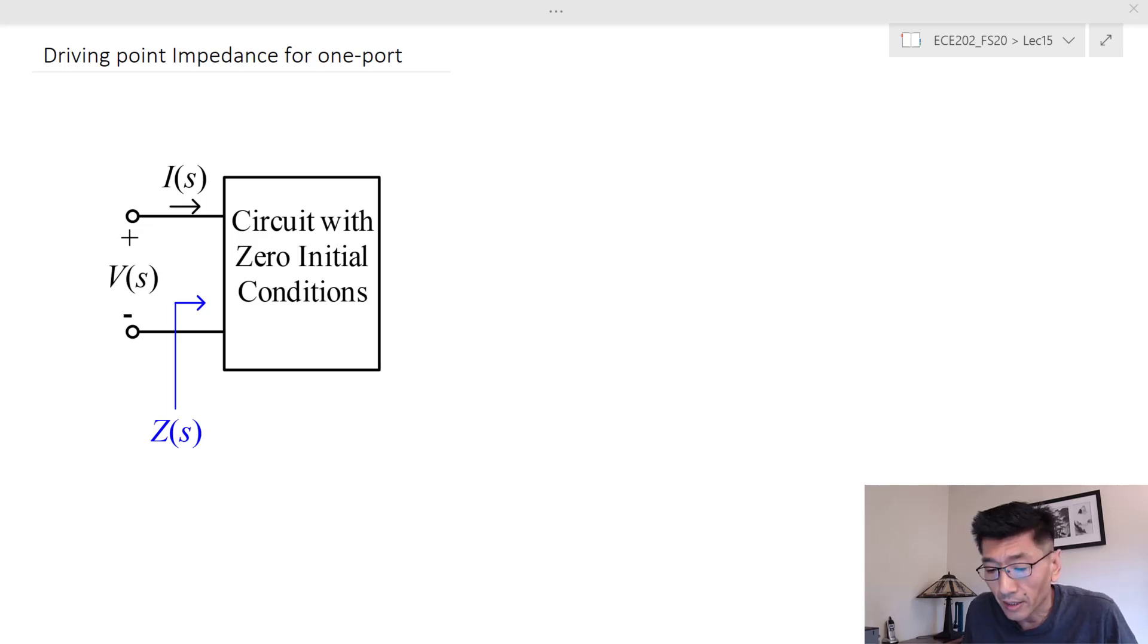Let's look at the driving point impedance for the one-port network. The one-port network is a circuit with zero initial conditions, or in zero state, and this circuit is basically a connection of various elements.